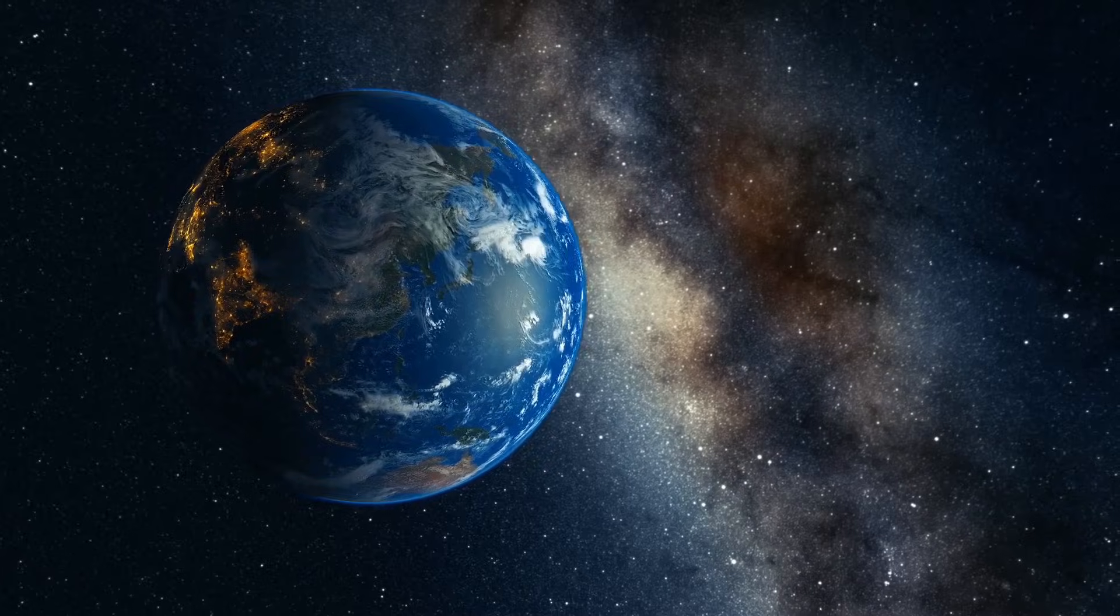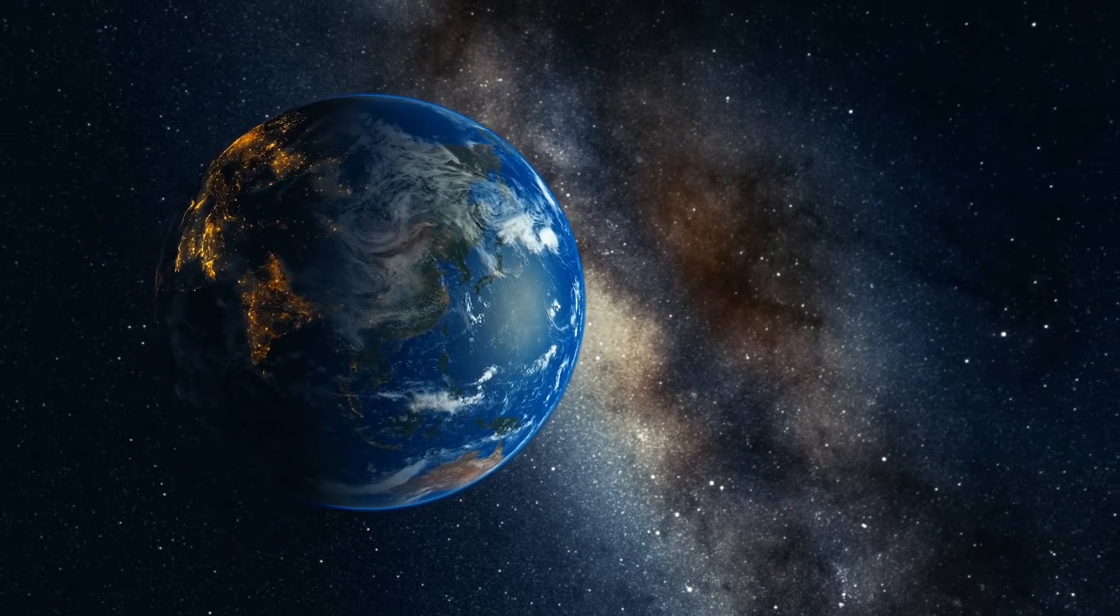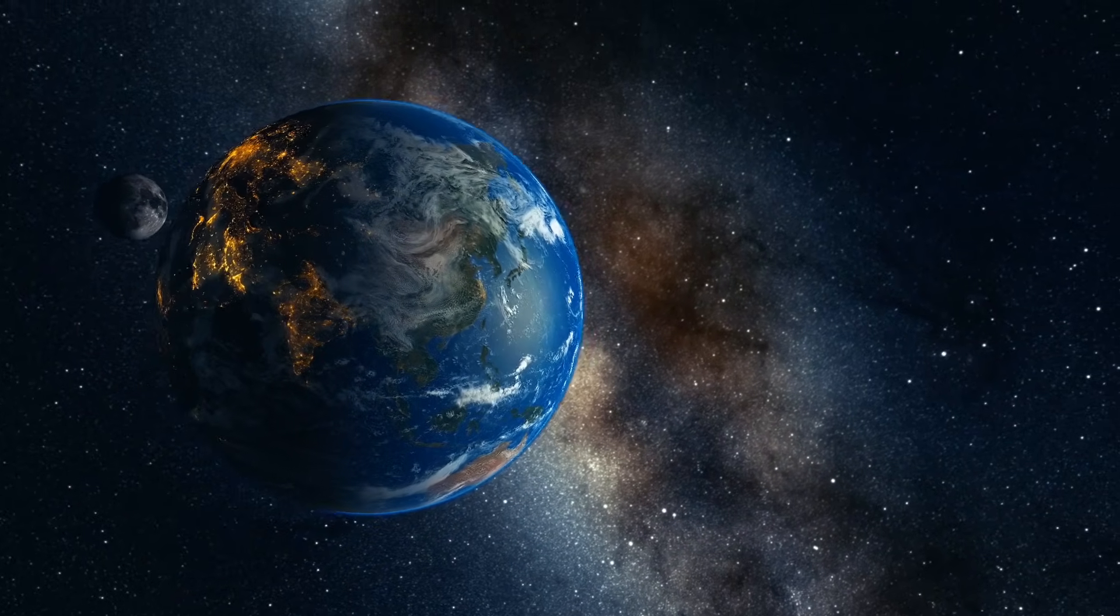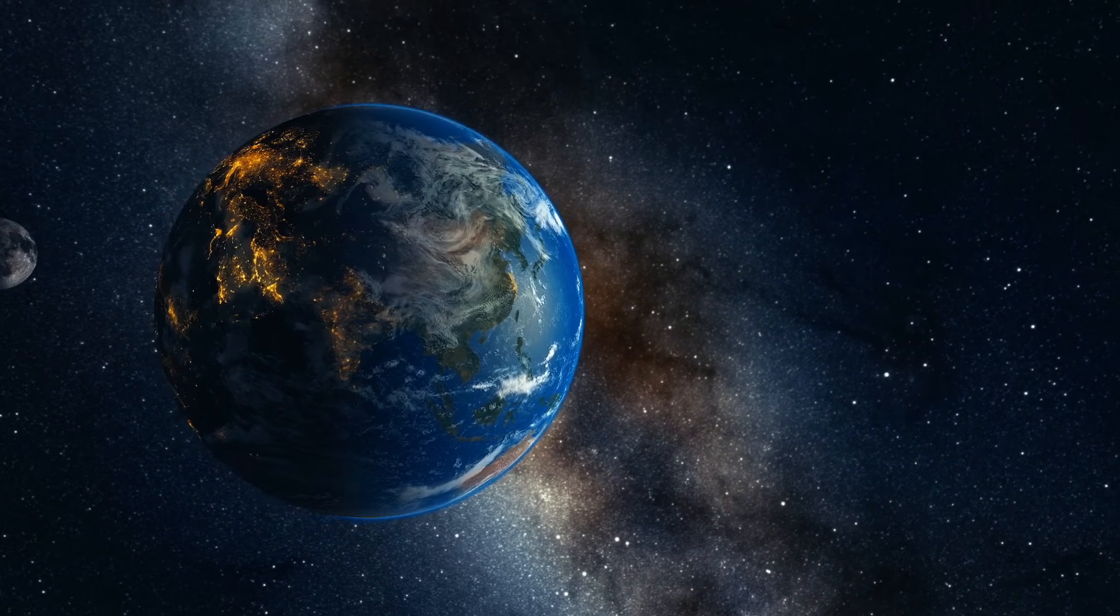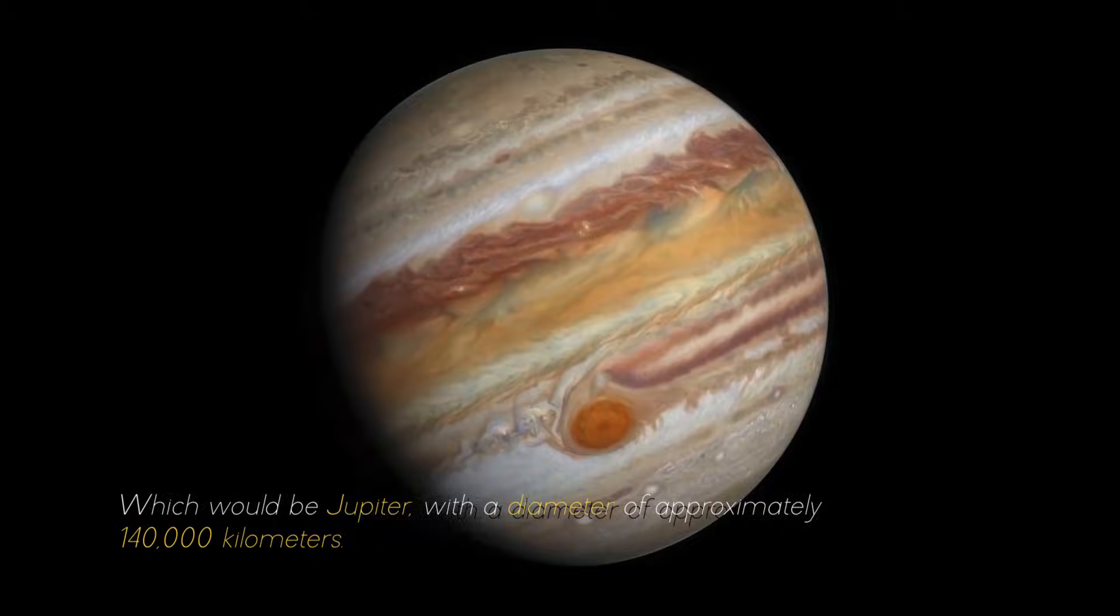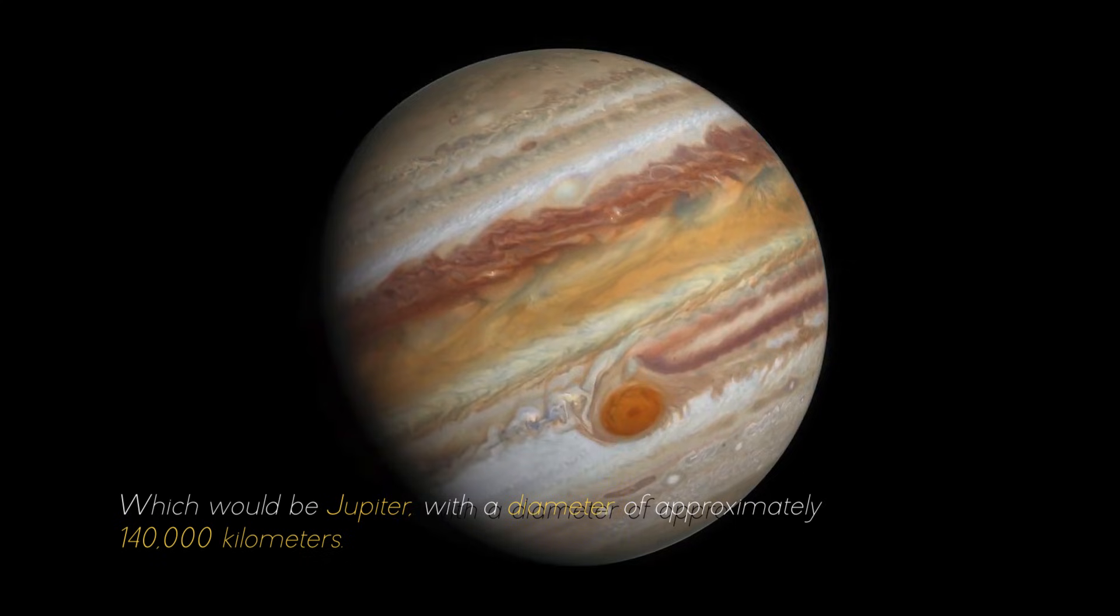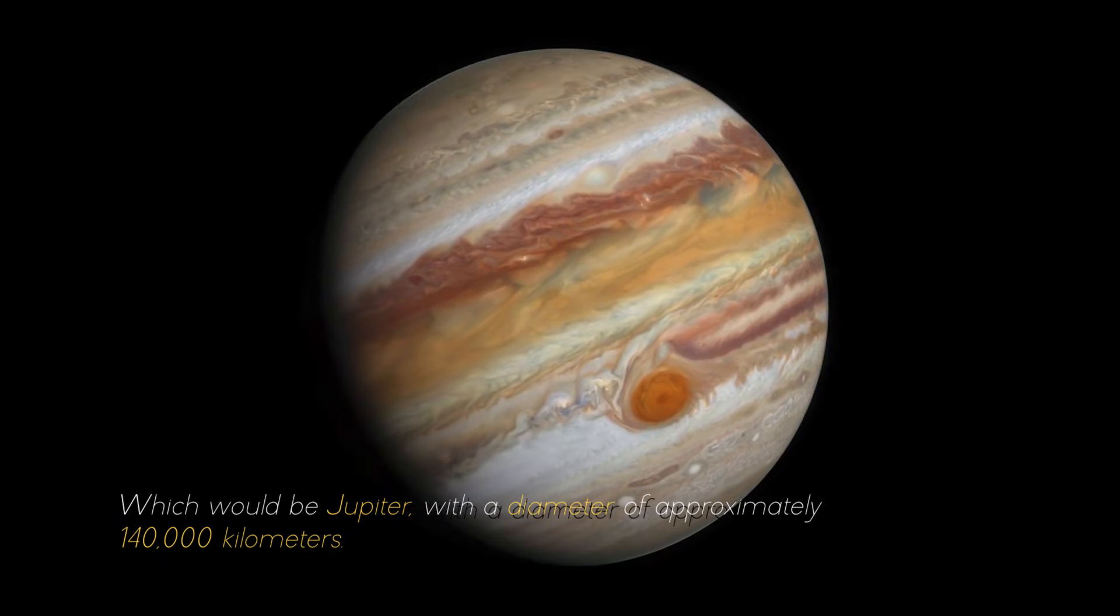If we compare it with the largest planet in our solar system, it would look like a ping-pong ball in front of a soccer ball, which would be Jupiter, with a diameter of approximately 400,000 kilometers.